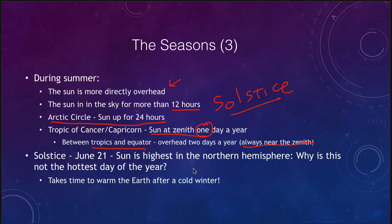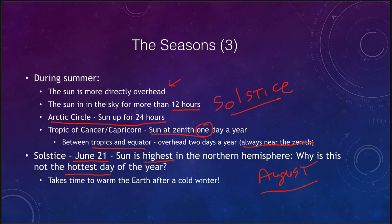The summer solstice is June 21st, when the sun is highest in the sky in the northern hemisphere. But why is this not the hottest day of the year? Usually it's hotter in August. It takes time to warm the earth — the earth has just been in a freeze during winter, and it takes many long days with the sun high in the sky to warm it up. Similarly, December 21st is when the sun is lowest in the sky and daylight is shortest, but it's not the coldest day because the earth has been warm from summer and it takes time to cool off.